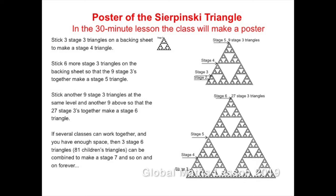If several classes can work together and you have enough space, then three stage 6 triangles — that's 81 of the children's triangles — can be combined to make a stage 7 triangle. And so on and on forever.